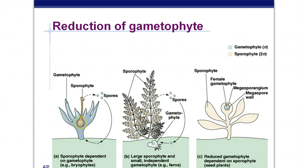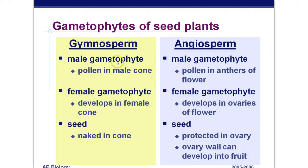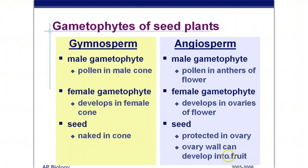The sporophyte is fairly small in bryophytes like mosses, then we have a reduction of the gametophyte, and the gametophyte is very, very tiny within flowering plants. Gymnosperms have the male gametophyte inside the male cone. The female gametophyte that has the eggs is in the female cones. The female cones are woody; the male cones are kind of soft and sticky. The seeds don't have a fleshy covering of fruit around them, so they're called naked. Angiosperms: the male gametophyte is in the pollen and anthers of the flower. Anthers are the male parts of the flower that produce sperm, or pollen that will eventually become sperm. The female gametophyte develops in the ovaries of the flower, in the center of the flower. The seed is protected in the ovary, and the ovary wall turns into a fruit later on.